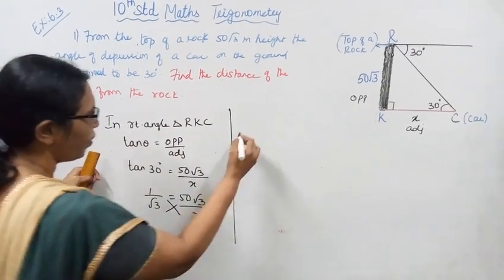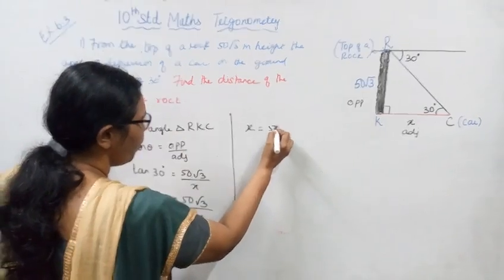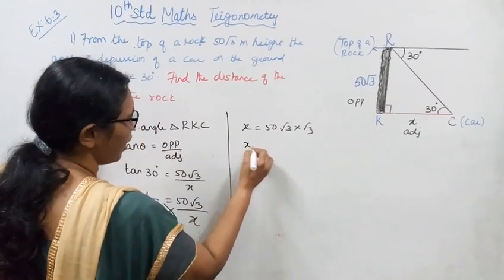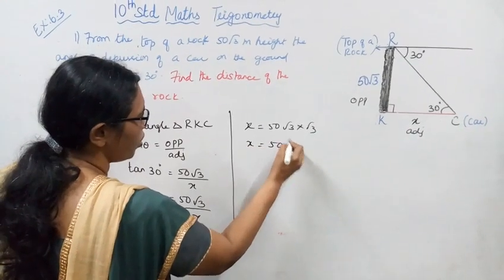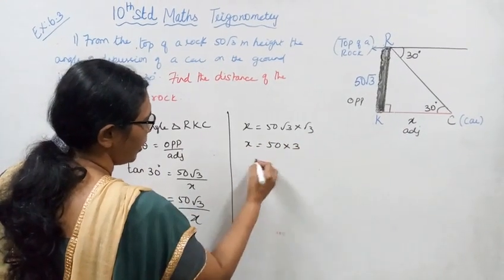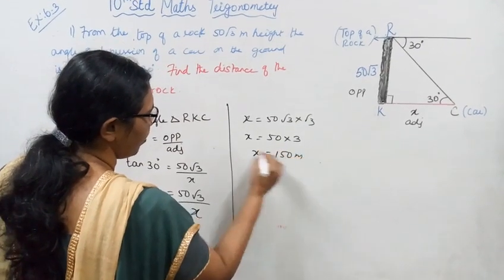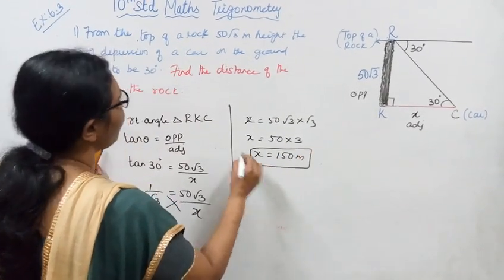Cross multiplying, we get x = 50√3 × √3. That equals 50 × 3, which is x = 150 meters.